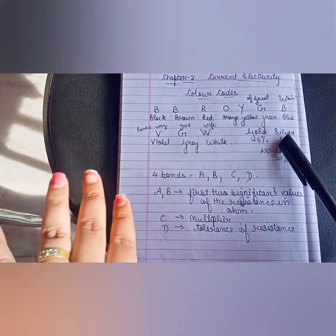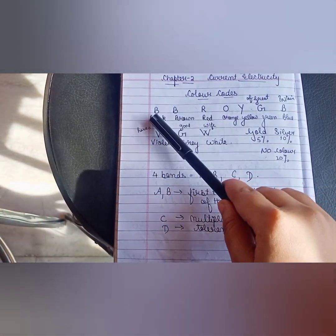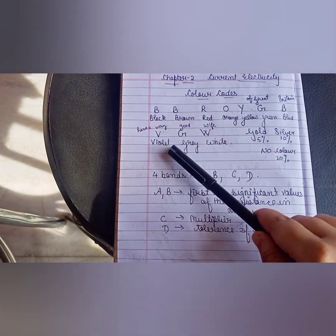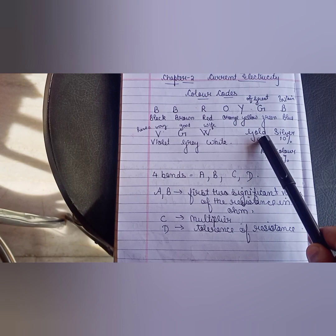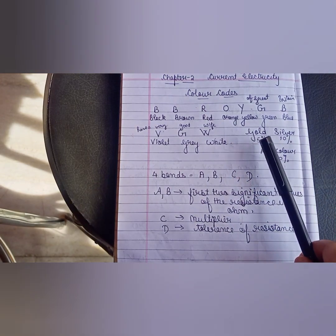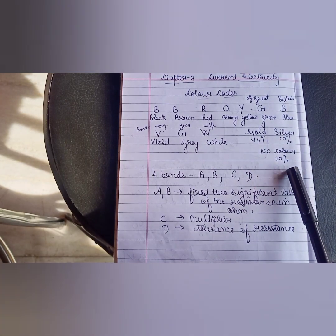Now we have to remember the colors in the series starting from black. Black, brown, red, orange, yellow, green, blue, violet, grey and white. And if you have gold, silver or any color, you will not have this percentage. Gold is 5% and silver is 10% and when there is no color, it will be 20%.